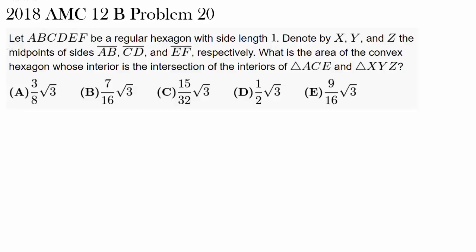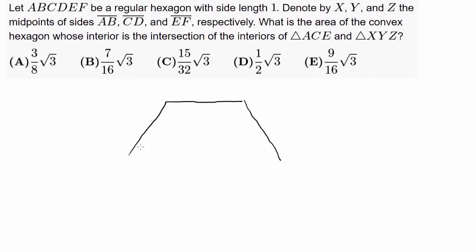We have problem 20 from 2018 AMC 12B. Let ABCDEF be a regular hexagon with side length 1. We have a geometry problem, so the first thing we should do is draw an accurate diagram. Let's draw a regular hexagon with side length 1.